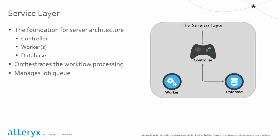Now if we go into another level deeper, we can look at what happens inside the service layer. There are three main components: the controller, the worker, and the database, which is interchangeably used in many spots in our documentation as persistence.